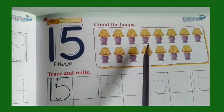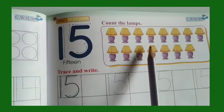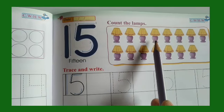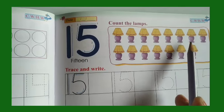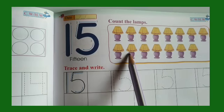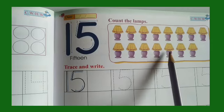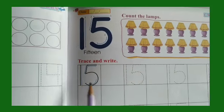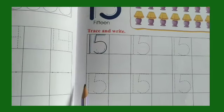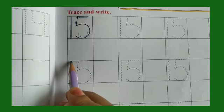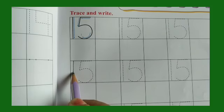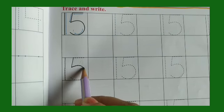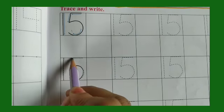Children, see here, these are lamps. Let us count the number of lamps: one, two, three, four, five, six, seven, eight, nine, ten, eleven, twelve, thirteen, fourteen, fifteen. Right, so trace and write number fifteen. One is already done here, so let us trace. This is number fifteen, and then write five.